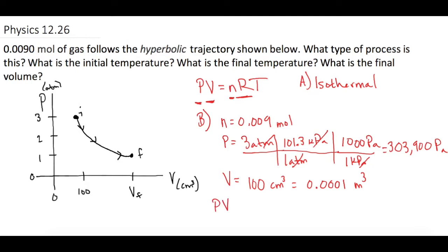So PV divide both sides by nR equals T. So when we plug in the numbers we get 303,900 pascals times the volume which is 0.0001 cubic meters and all that by n which is 0.009 moles times the constant 8.314 joules per mole K.